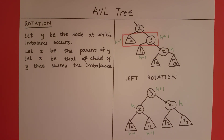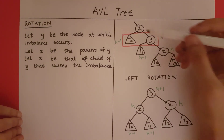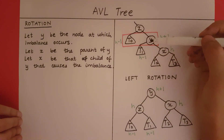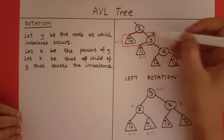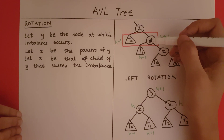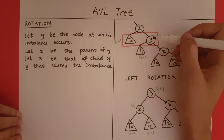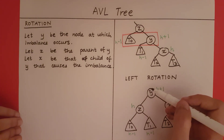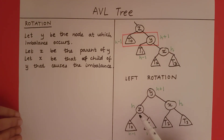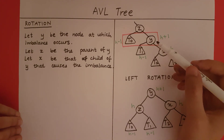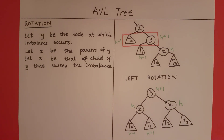A simple way to remember how any rotation works is that we take the middle value and set that as our root. For example, we have Z followed by Y followed by X. Since this is a binary search tree, Y is greater than Z and X is greater than Y. The middle value between these three is Y. So we set Y as the root, put Z as the left subtree of Y, and X as the right subtree of Y.